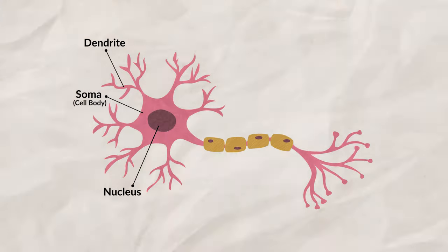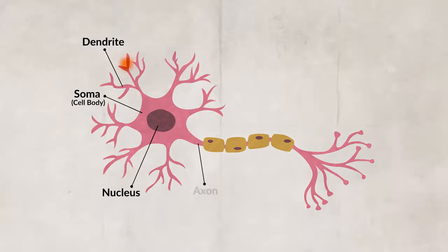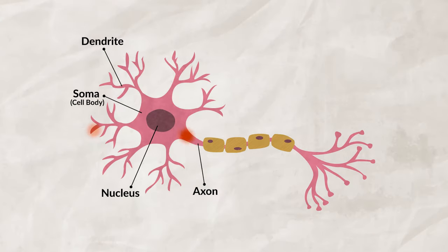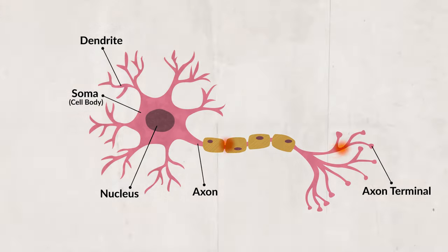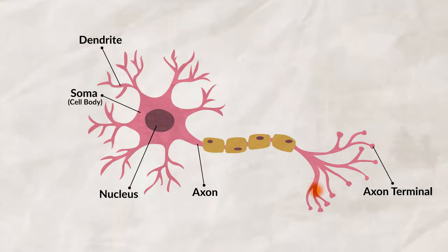Remember from our last video: a neuron only fires if there's a strong enough stimulus to cause an action potential. This sends an electrical signal through the axon down to the axon terminal, where neurotransmitters are located in the synaptic vesicles, and are released from the axon terminals and then bind to the receptors on the postsynaptic neuron. That was a quick overview — if you need a better refresher, make sure you go back and watch the previous video.